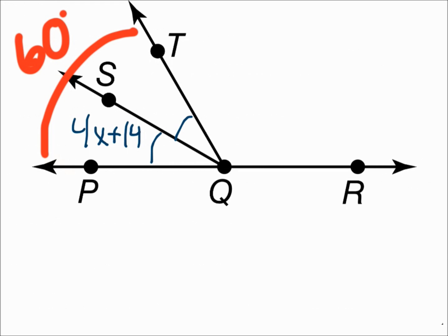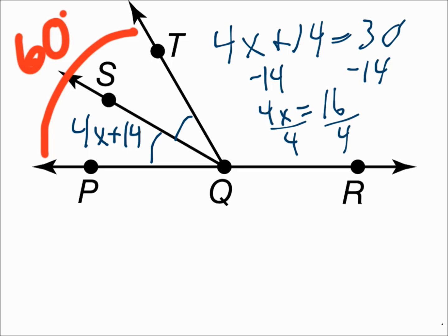The whole angle is 60, but it's cut in half. So each of these halves equals 30 degrees, which means that 4X plus 14 equals 30 degrees. Subtract 14 from each side, 4X is 16, divide by 4, and X equals 4.